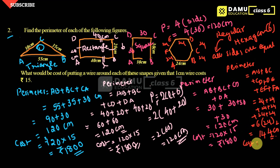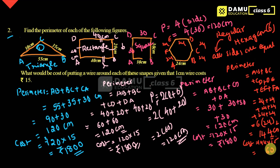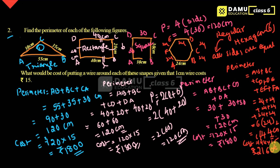The cost for the hexagon is 144 into 15. Calculating: 144 times 15 equals 2160 rupees. So the cost to put wire around the regular hexagon is 2160 rupees. Thanks for watching — please subscribe.